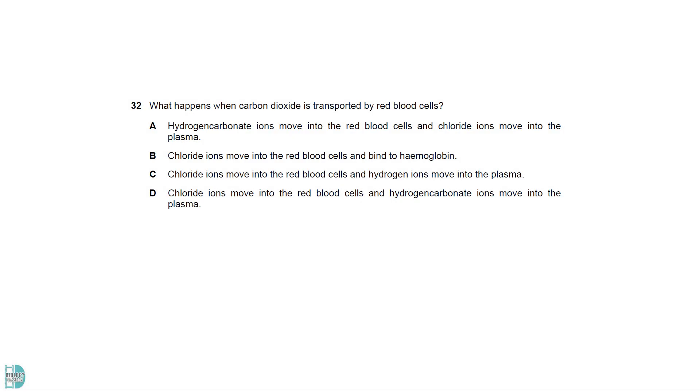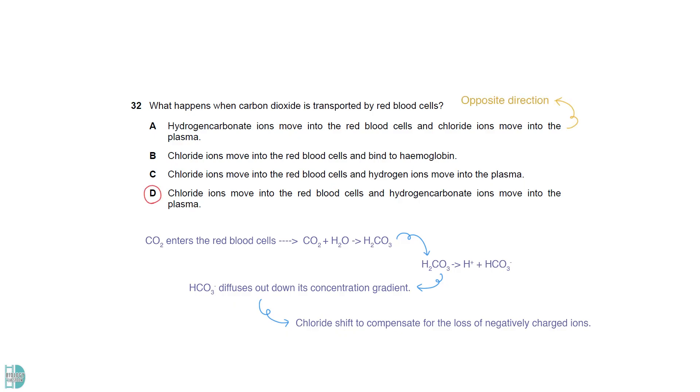After carbon dioxide enters the red blood cells, the enzyme carbonic anhydrase catalyzes its reaction with water to form carbonic acid. It will then dissociate into proton and hydrogen carbonate ion. The hydrogen carbonate ion diffuses out its concentration gradient, leading to a chloride shift which compensates for the loss of negatively charged ions. D describes the correct direction of the movement while A states the opposite. B is wrong because chloride does not bind to the hemoglobin. C is incorrect as hydrogen ions will not move out of the cells.